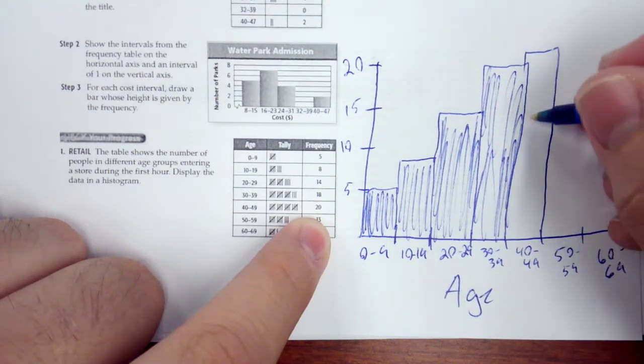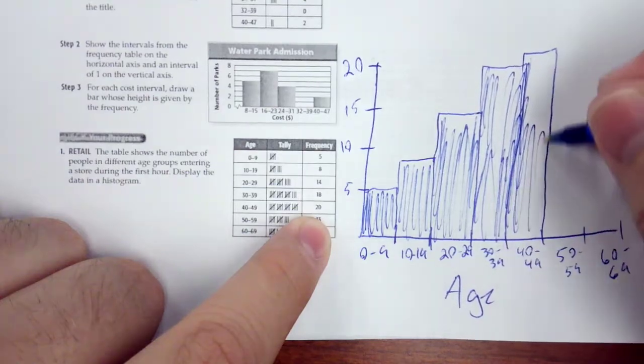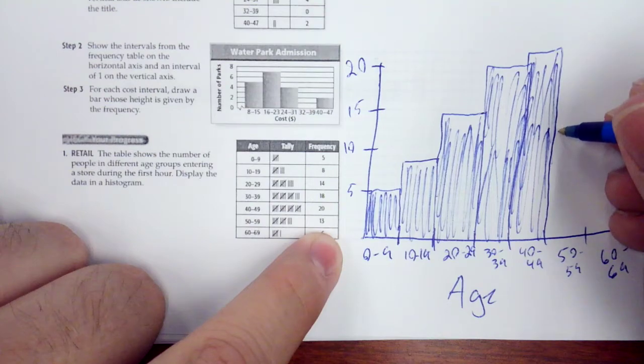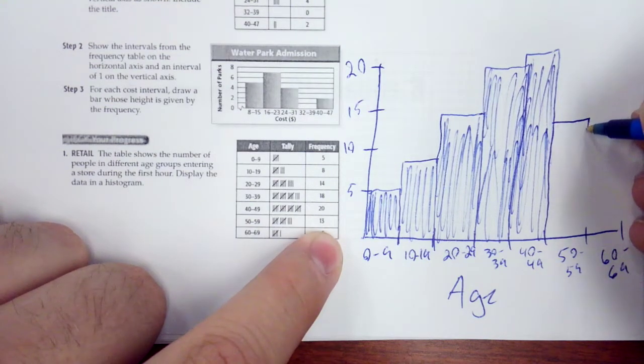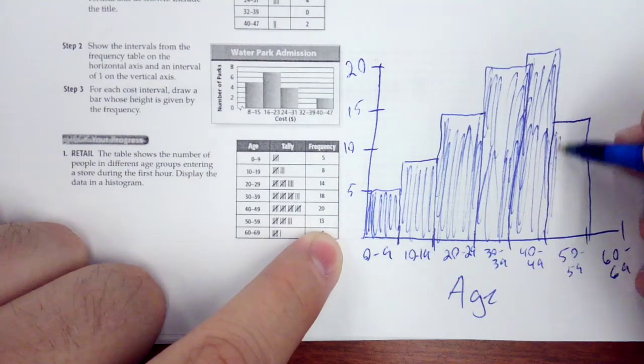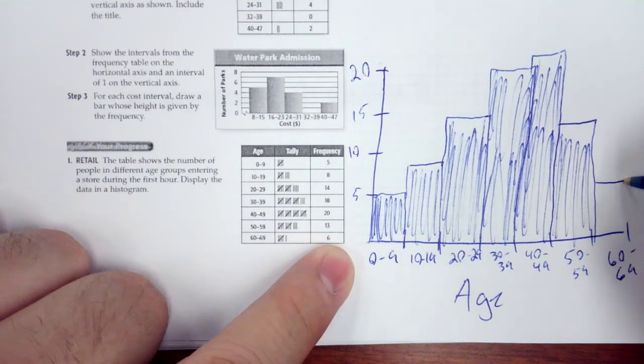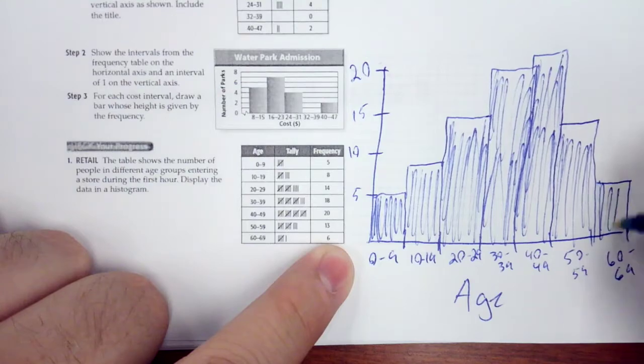All the way up here. My bars are starting to look like different sizes, because I'm not using graph paper or a straight edge. So if you want your histograms to look all purdy, then you need to use a straight edge or a ruler or graph paper.